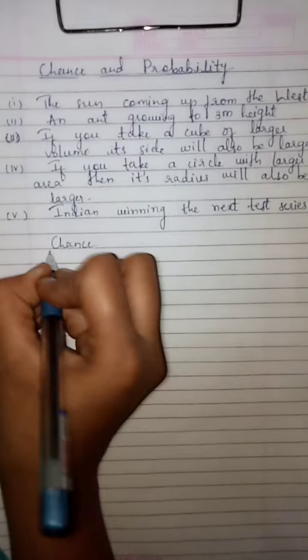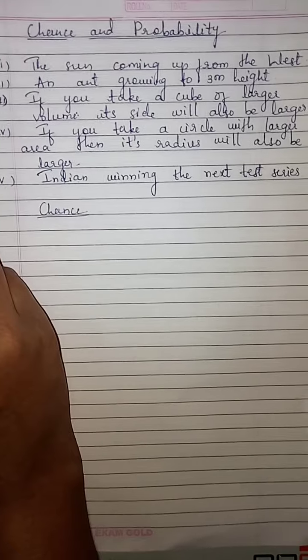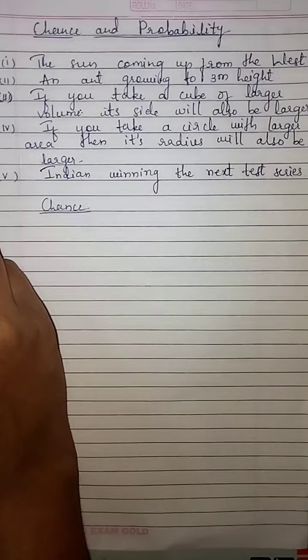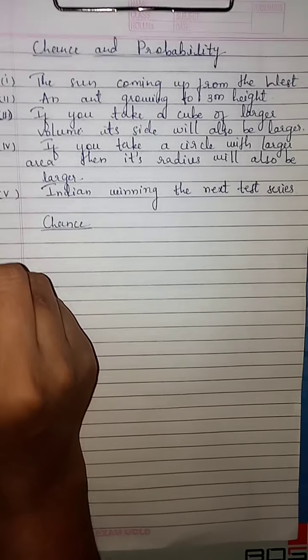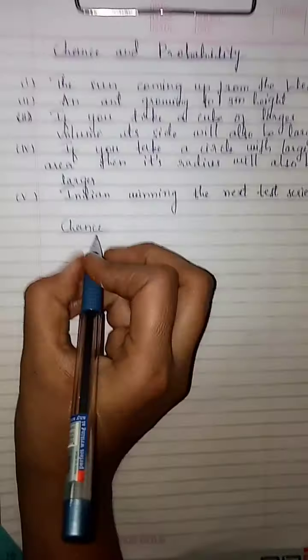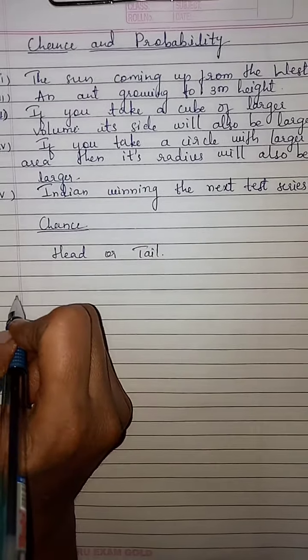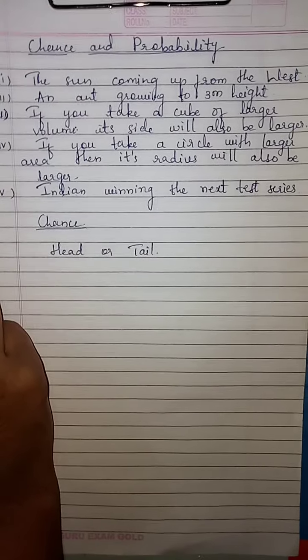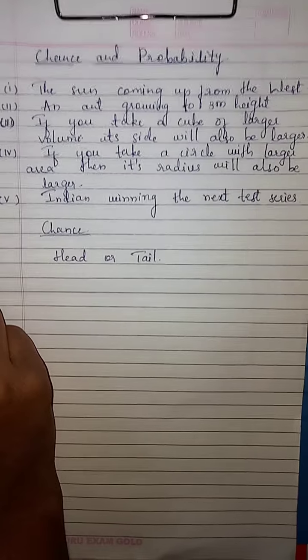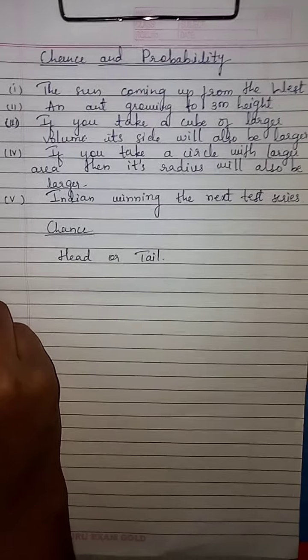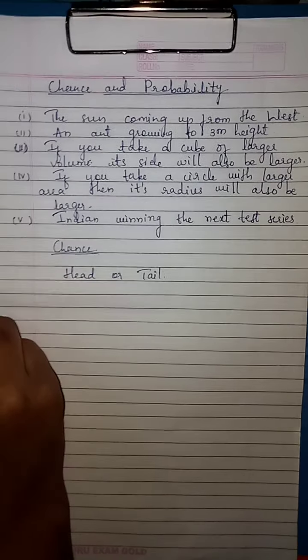Now we will study about chance. If you toss a coin, can you always correctly predict what you will get? There are two chances: either you get a head or you get a tail. You can't exactly tell which you will get. There is no fixed pattern of the occurrence of head and tail. Each time the outcome of every throw can be either head or tail — it is a matter of chance.